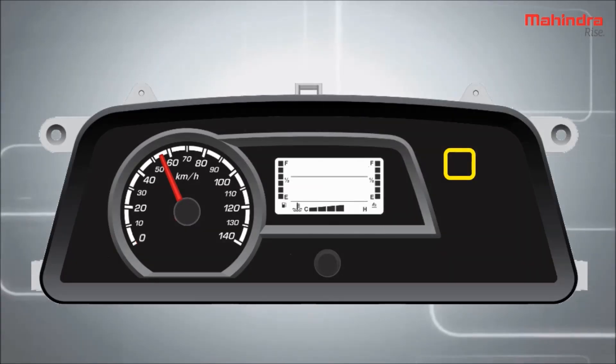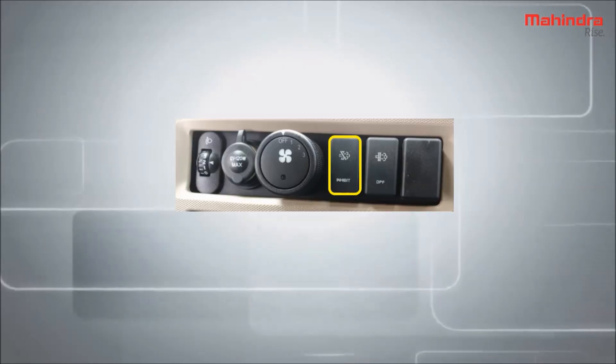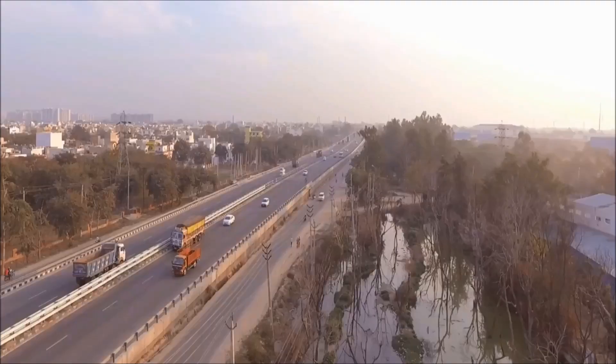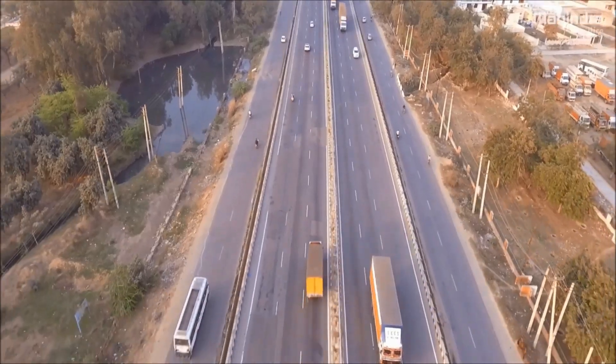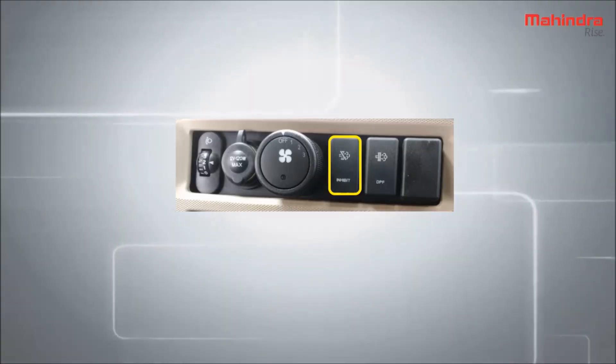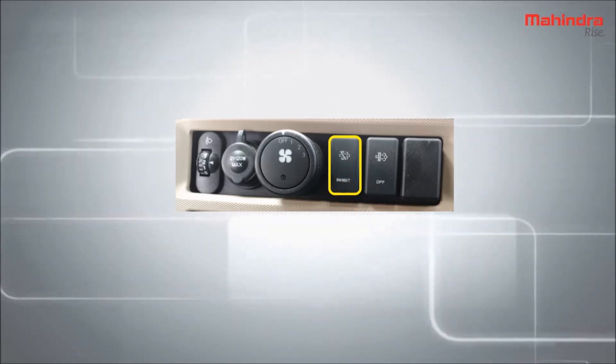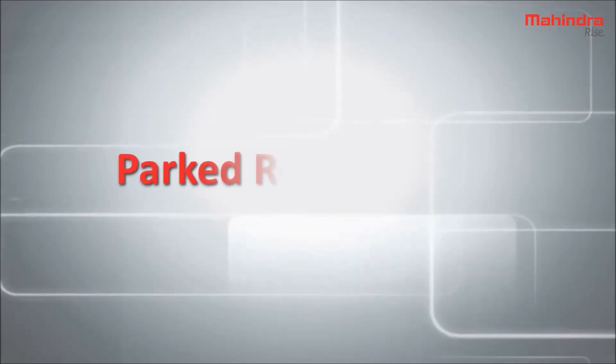If due to some reason the driver needs to postpone the active regeneration process, it can be done by pressing the inhibit switch. As soon as the surrounding location of the vehicle is suitable for regeneration, then turn off the inhibit switch, which is the normal position of the inhibit switch.